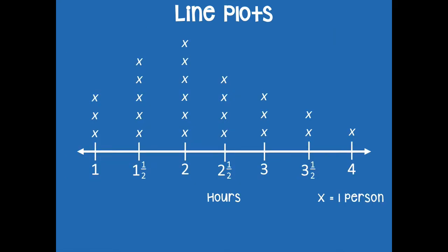So here's a full-on line plot. When we have line plots, you're going to have your number line or scale across the bottom, and then you're going to have some sort of markings across the top. Typically they're in X's. And if we look at this, we have all the numbers across the bottom represent hours and the X equals one person.